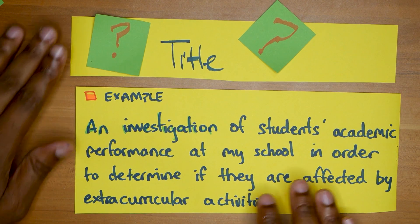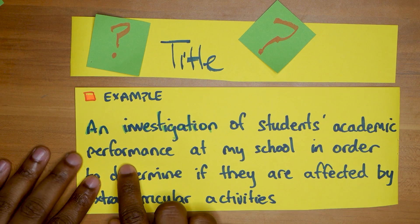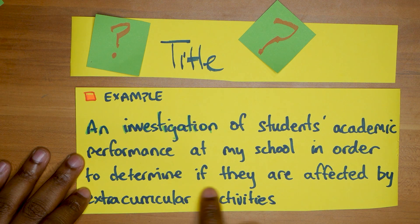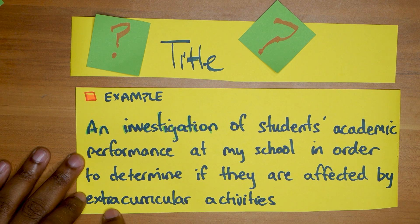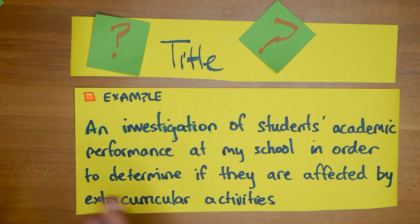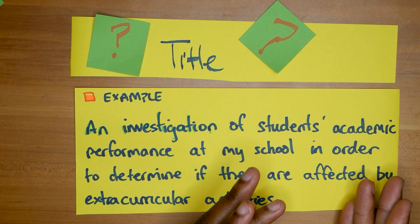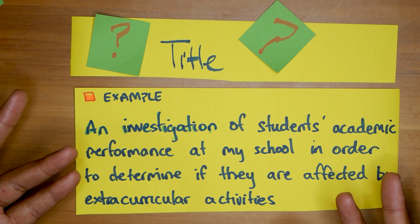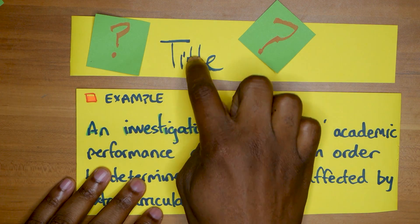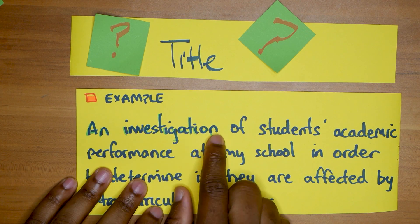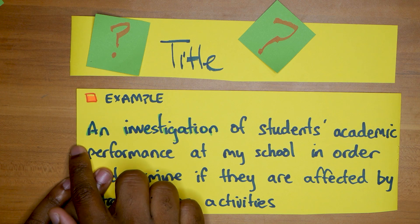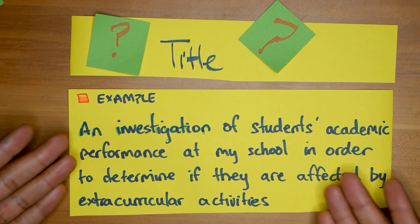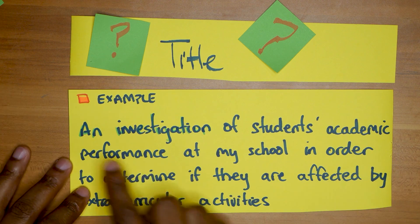Here's an example of a title: 'An investigation of students' academic performance at my school in order to determine if they are affected by extracurricular activities.' So we check any students that take part in extracurricular activities and compare their grades with students who don't. For the title, you normally start off with 'an investigation' or 'a study,' especially if it's a statistics SBA.